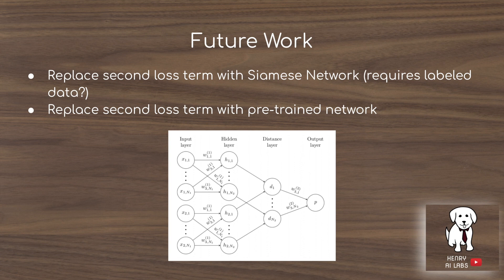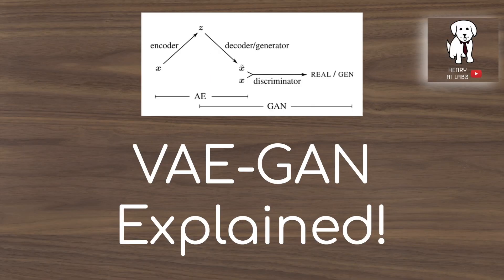Some future work they discuss includes replacing the second loss term with a Siamese network, although it would require labeled data. They also suggest that instead of using the discriminator's intermediate features, one could use a ResNet trained on ImageNet classification. Thanks for watching this explanation of the VAE-GAN. Please subscribe to Henry AI Labs for more deep learning videos.